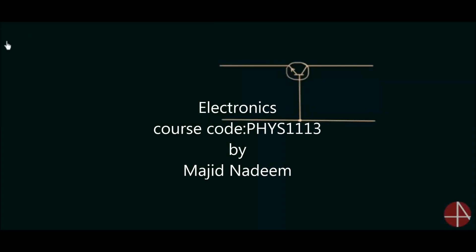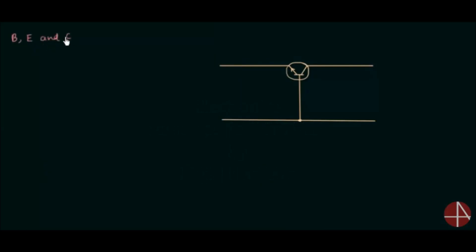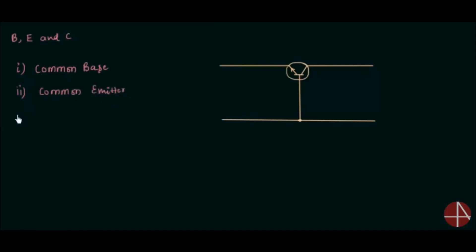The three terminal device has three terminals: base, emitter, and collector. Because of this, we have three transistor configurations. The first is common base configuration, the second is common emitter configuration, and the third is common collector configuration. Out of these three, common emitter configuration is mostly used because of various advantages.